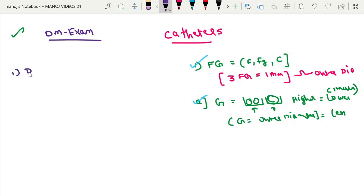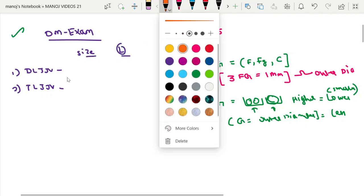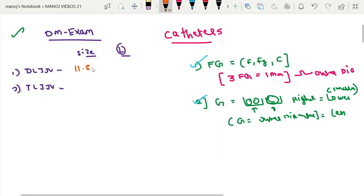First is the double lumen IJV catheter. Second, we will see the diameter and French gauge of the triple lumen IJV catheter. For the double lumen IJV catheter, the size is 11.5 French and the length is 13.5 centimeter. For the triple lumen IJV catheter, it is 12 French, length is the same 13.5 cm.